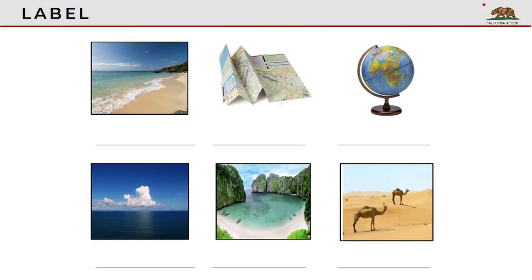In Section 5, you should write the English word next to the picture. Beach. Map. Globe. Ocean. Bay. Desert.